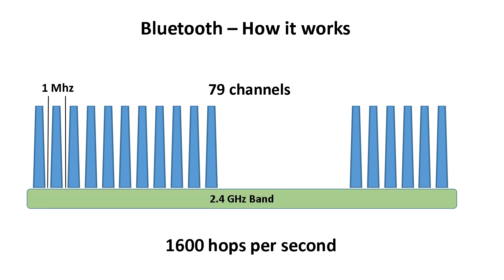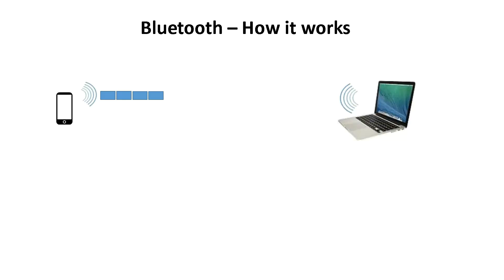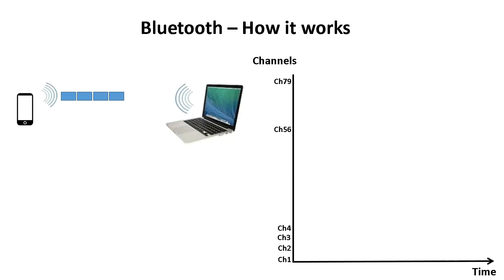Let me clarify this a little bit more. Let's consider the case of a smartphone transmitting a file to a computer. With frequency hopping, the data will be transmitted in small pieces called packets. The first packet will be sent on a randomly selected channel, let's say channel 56. The next data packet will use a different channel also randomly selected, let's say channel 4, and the process continues in this fashion till all packets are transmitted.